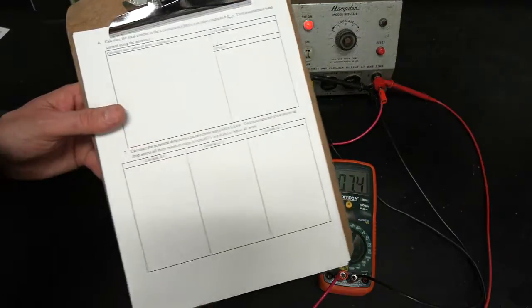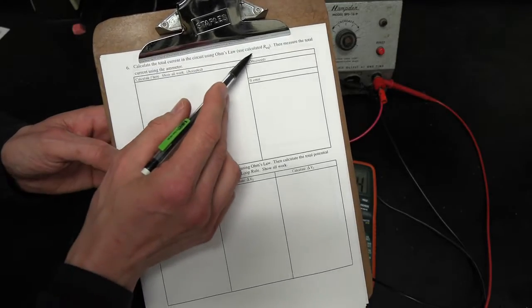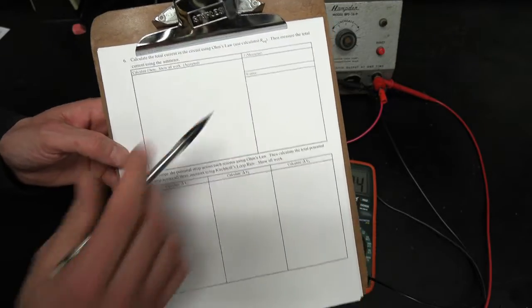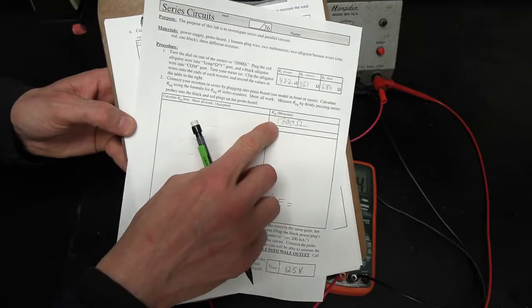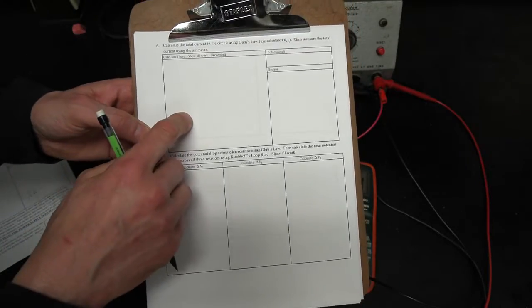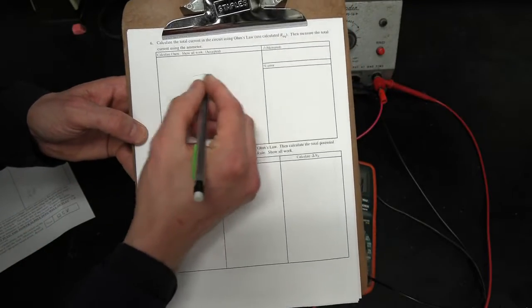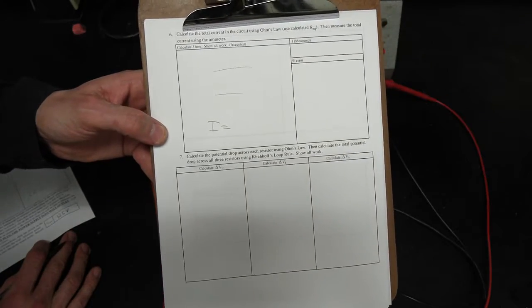All right, so now we're ready to move on to the next page. So step six, very similar to the last lab. We're going to calculate the total current in the circuit using Ohm's law and use the calculated REQ. In other words, use this value, not that value. Use this value in your calculation. Calculate what I is. So again, there. There. Okay. Get an answer.